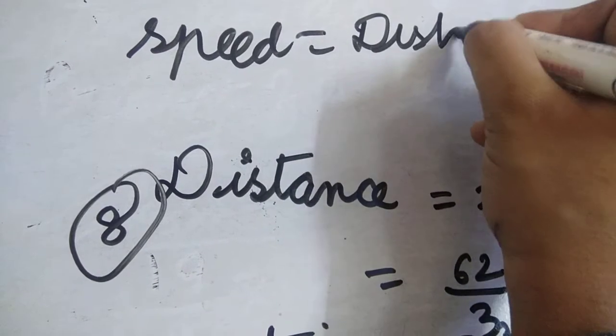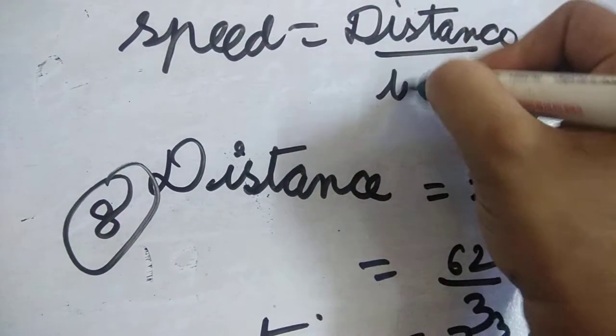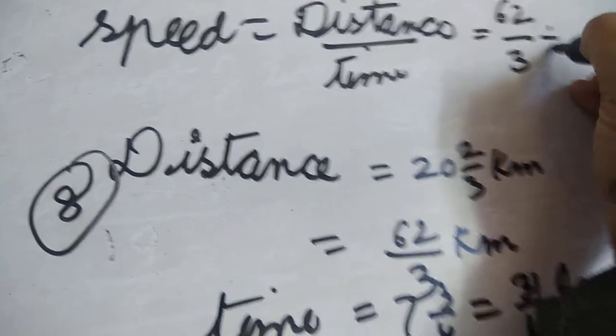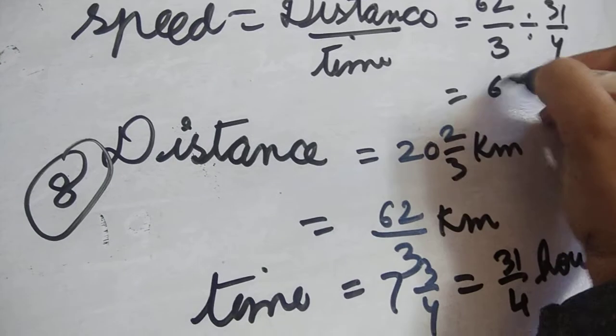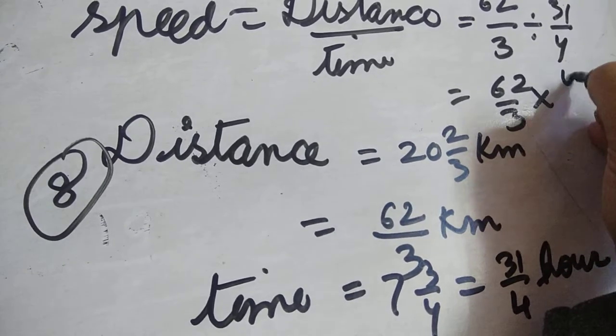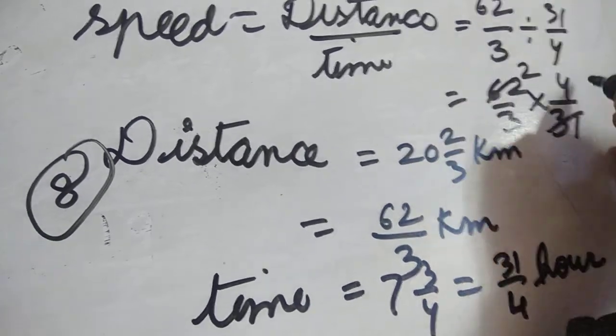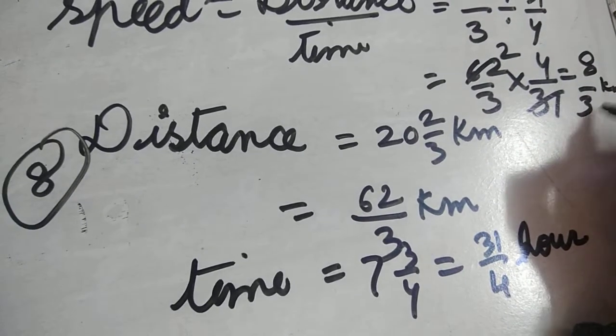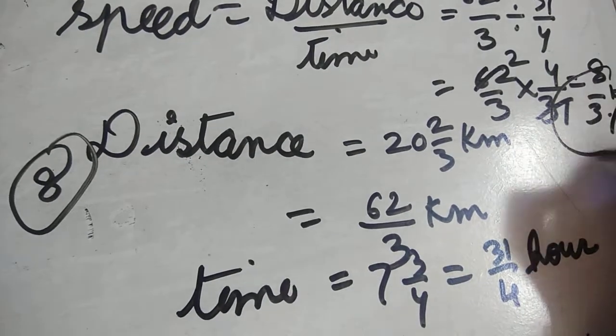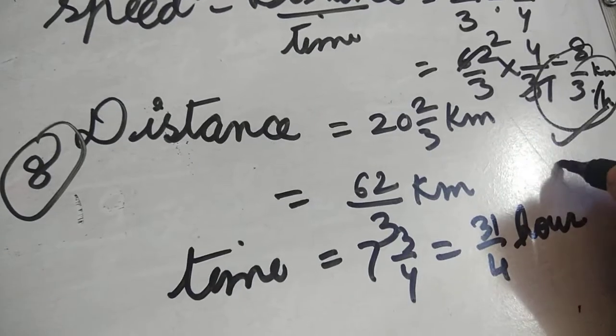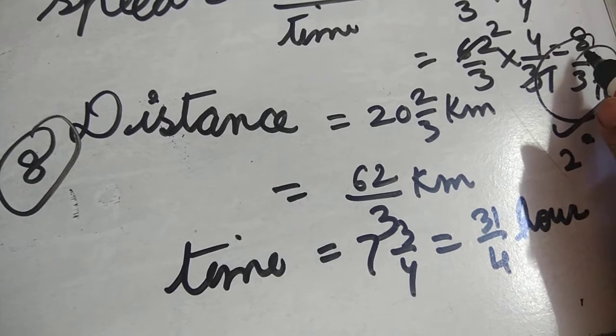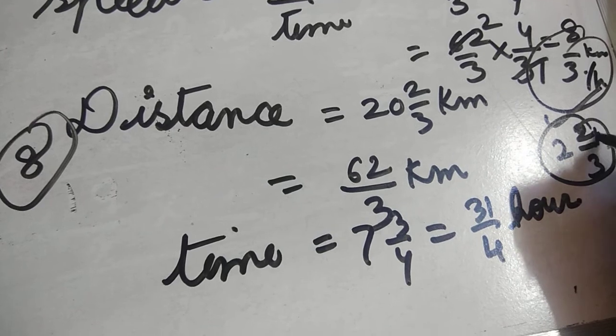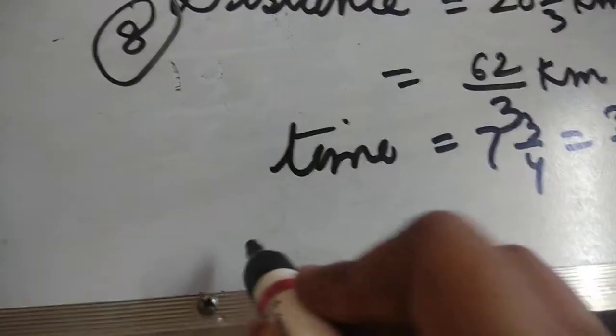Distance upon time, so distance is 62/3 divided by 31/4. Take the reciprocal: 62/3 times 4/31 equals 8/3 kilometers per hour. This is your answer. How we can simplify: 2 times 4 is 8, over 3 kilometers per hour. So 8/3 kilometers per hour is the speed.